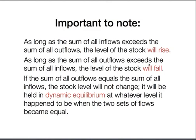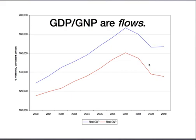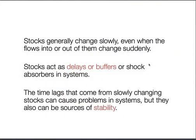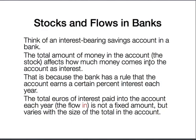GDP and GNP are actually flow measures. Stocks change slowly — think about inventories or populations; they change slowly over time and delay or buffer the various shocks the system sees. Time lags from slowly changing systems can cause problems, but they can also be large sources of stability. Think about savings accounts in banks: the total amount of money in the account is the stock — the bathtub level — and the bank decides how much interest you'll earn based on that total stock. The total euros of interest paid into the account each year is not a fixed amount but varies with the total in the account, so the stock influences the flow and vice versa.